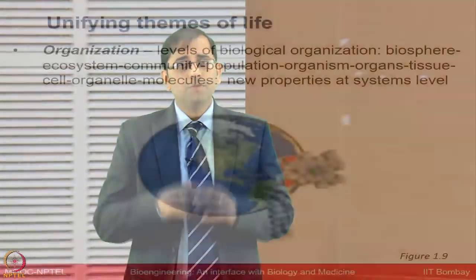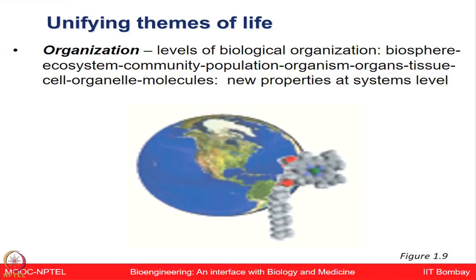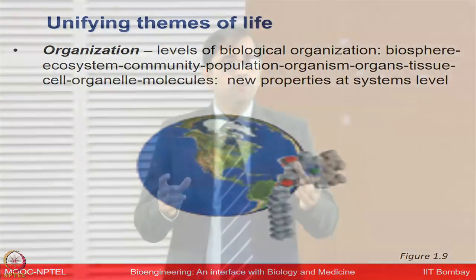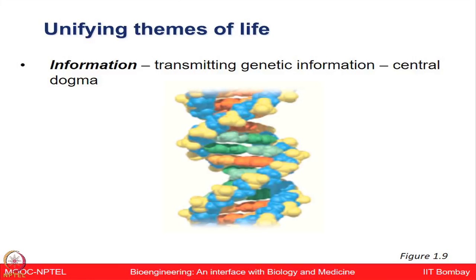Let us talk about the unifying themes of life and biological organization. The levels of biological organization start from the biosphere, ecosystem, community, population, organism, organs, tissue, cells, organelles, and then molecules. All of these properties are governed at a systems level. This information is transmitted through the central dogma — where information from DNA is transcribed to RNA and then translated to proteins.